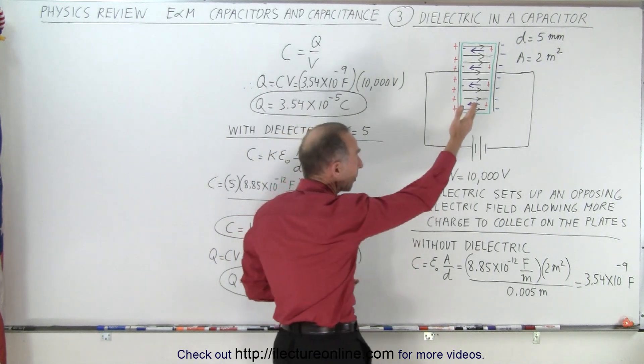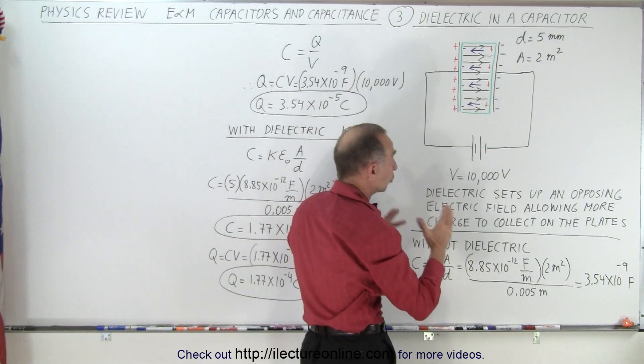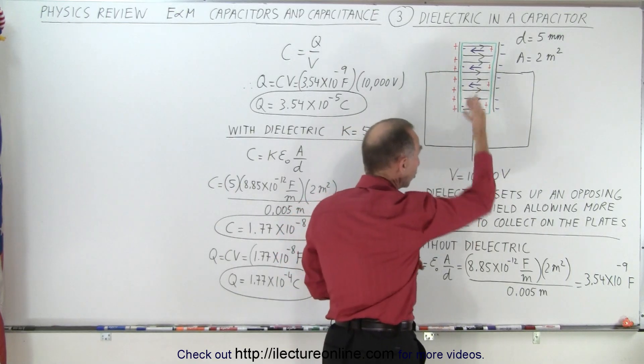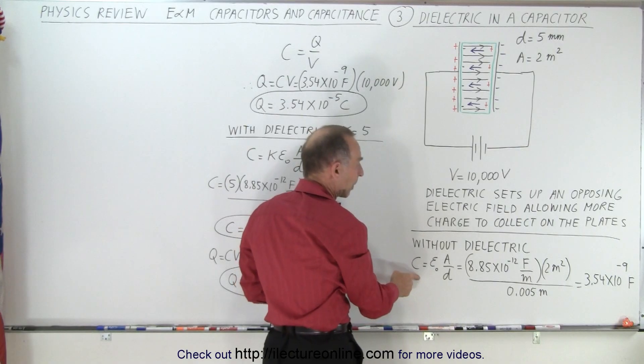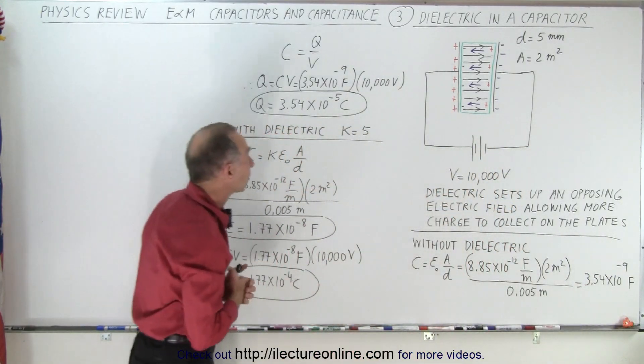So without the dielectric, using the dimensions we're given, the plates are 5 millimeters apart, the area is 2 square meters, and the voltage supply is 10,000 volts pushing the charges onto the plates. The capacitance then would be 3.54 times 10 to the minus 9 farads.